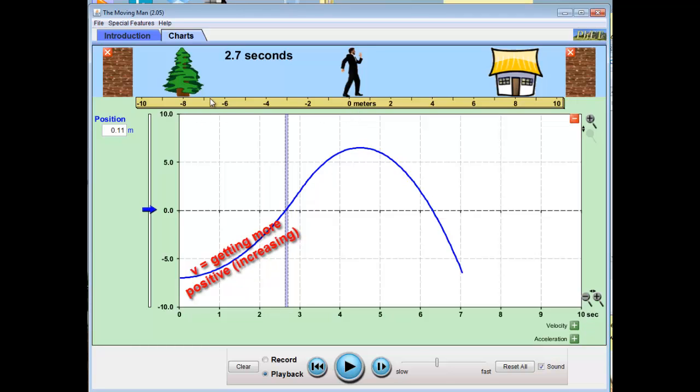He started at the minus seven and gradually accelerated. His velocity was getting more and more positive. Now he's at the zero position.